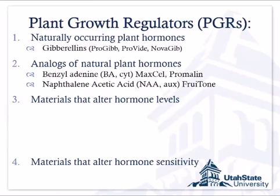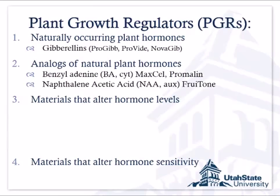Another analog example is naphthalene acetic acid, or NAA, used for thinning. NAA is an analog of naturally occurring auxins. The naturally occurring form is indole acetic acid, but it's extremely unstable — if you extract it from the plant, it just degrades. NAA is very stable, so it can be used as an applied auxin.